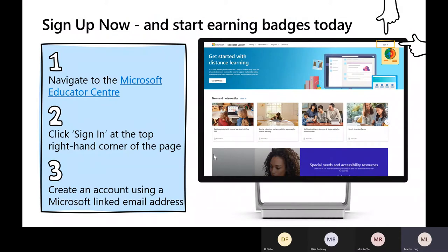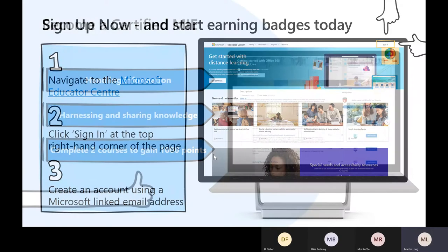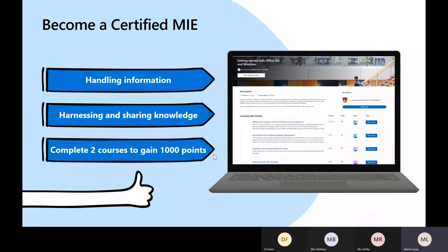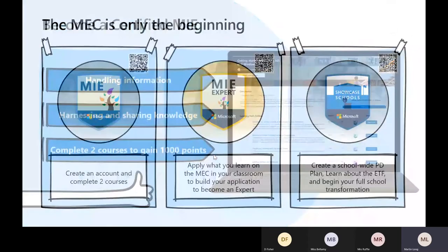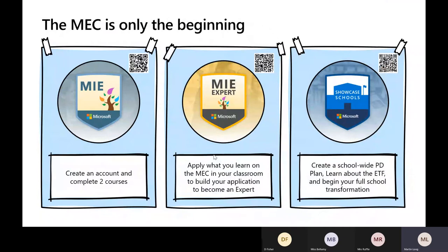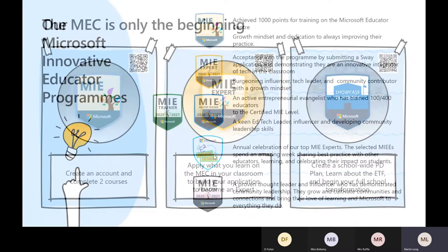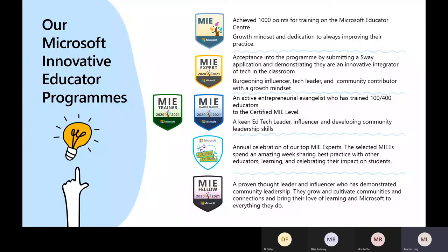Please log in using the account you've got for your school or college. Later in this session we'll give you a code to redeem, which will give you the equivalent of 1000 points covering the two OneNote courses we're going to cover today, and it will make you a certified Microsoft Innovative Educator. If you're really interested, you can apply before July 15th this year to become a Microsoft Innovative Educator Expert — demonstrating how you're using Microsoft products to transform learning in your own practice and possibly across the school.